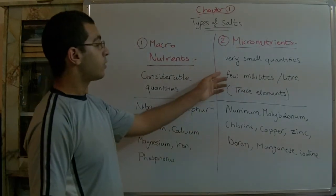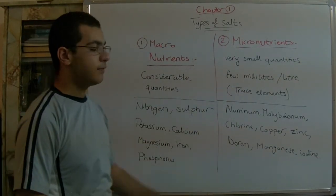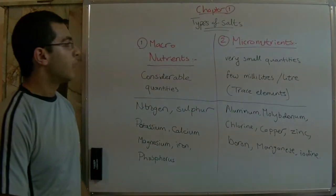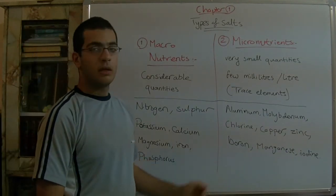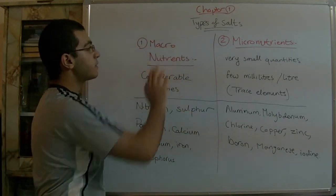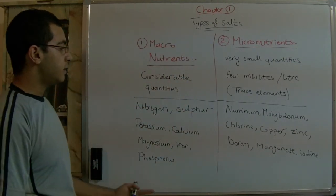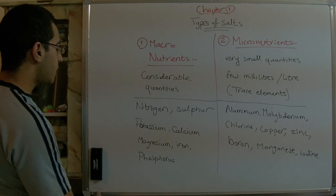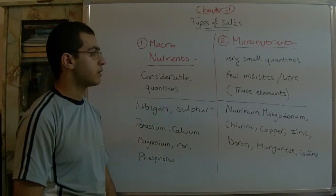These micronutrients are believed to be used in order to activate some enzymes in the plant. These are the types of salts which the plant uses in order to carry out the photosynthesis process.